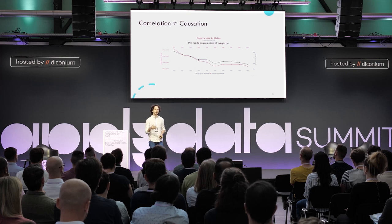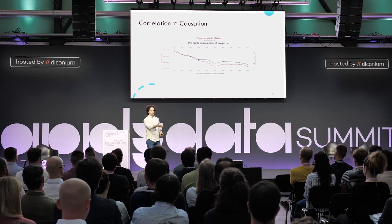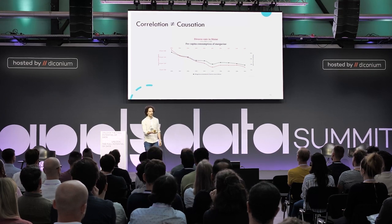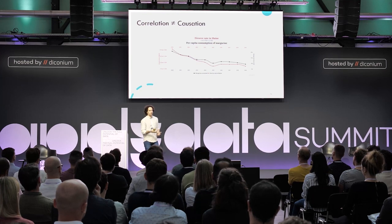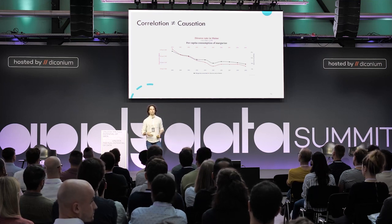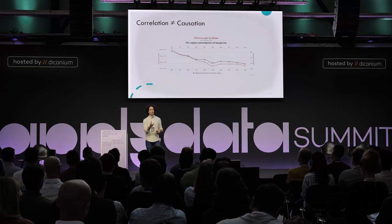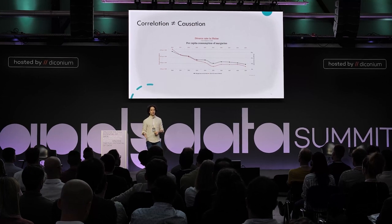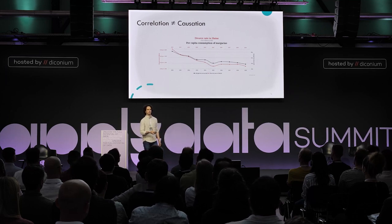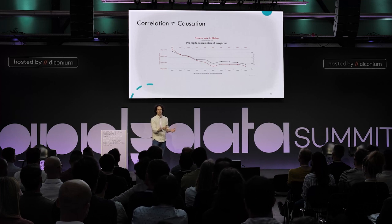Why, as human beings, when we look at something like the divorce rate in Maine correlated with per capita consumption of margarine — we know it's wrong, given the domain context. But sometimes it's not easy. With high-dimensional datasets from car sensors, for instance, business domain knowledge may not be enough to say correlation doesn't equal causation. How can you spot this? How can you quantify that the correlation is not equal to causation?